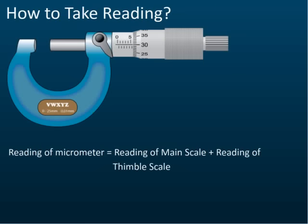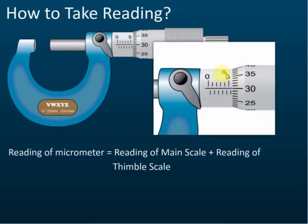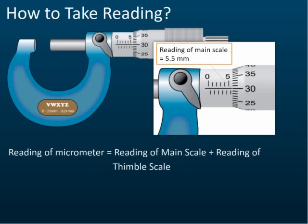For example, on the main scale each division is 1mm: 0, 1, 2, 3, 4, 5 — that's 5mm. But in the middle between these two divisions we have another scale, so that gives us 0.5mm increments: 0, 0.5, 1, 1.5, 2, 2.5, 3, 3.5, 4, 4.5, 5. So here the reading of the main scale is 5.5mm.